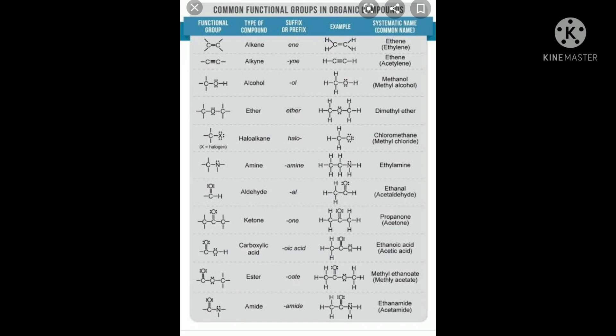For carboxylic acid, the functional group is -COOH (C double bond O with OH). The IUPAC suffix is 'oic acid'. Example: ethanoic acid.